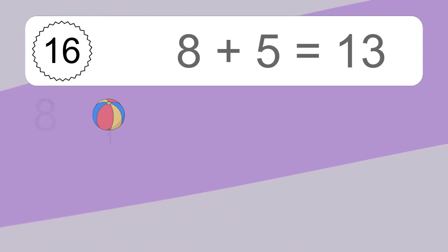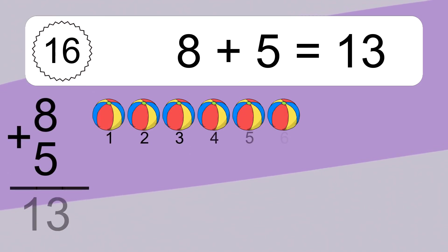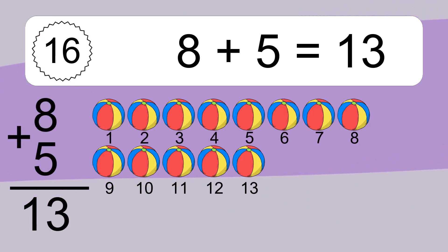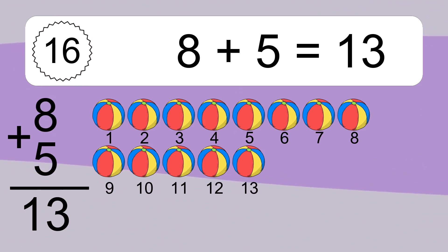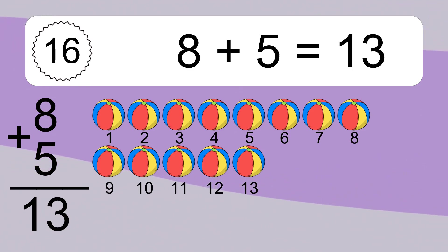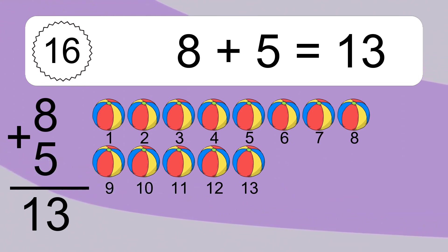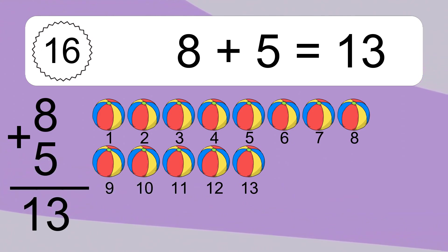8 plus 5 equals what? 8 plus 5 equals 13. Let's count it: 1, 2, 3, 4, 5, 6, 7, 8, 9, 10, 11, 12, 13.